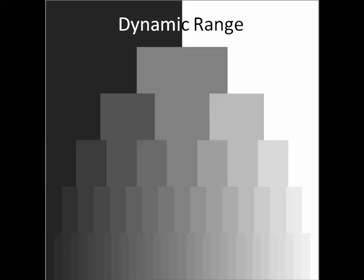Dynamic range refers to the number of separate luminance tones in a scene or in an image. Not all scenes have a broad dynamic range — the black cat in the coal bin or the white hare in a snowstorm. In the film days and with early sensors, the camera was capable of recording about five stops of dynamic range. If you had a scene with 12 stops of dynamic range, you needed to make multiple exposures to capture the low-end, mid-range, and high-end, and then combine that information into one file. This is the essence of HDR.